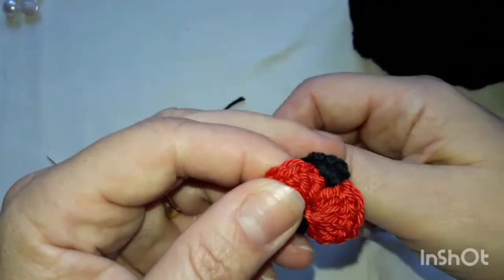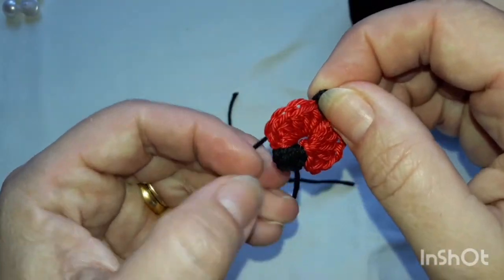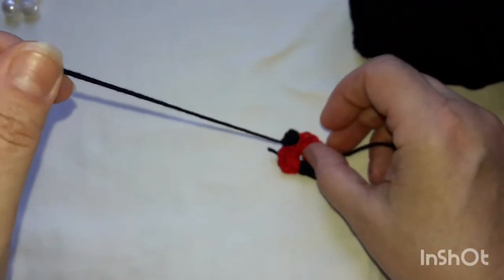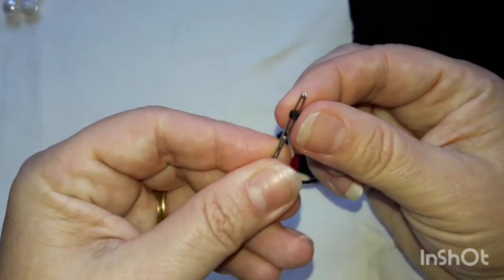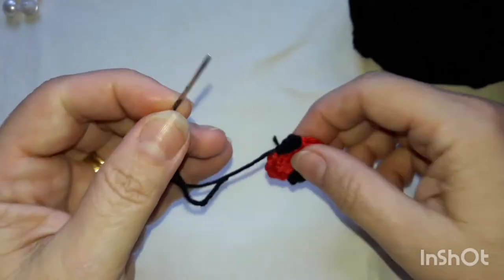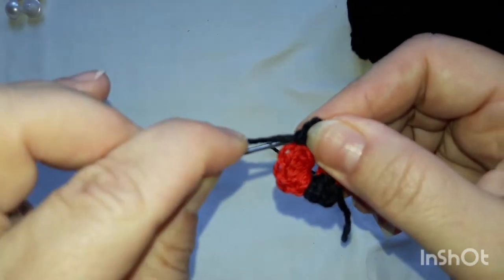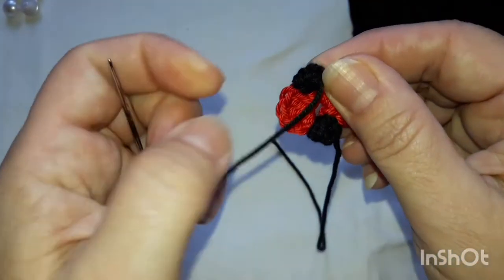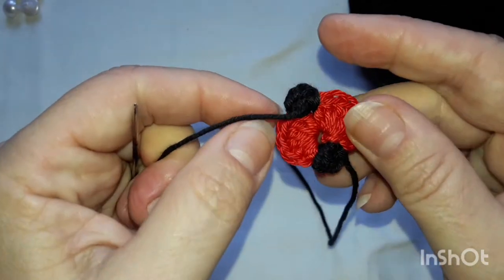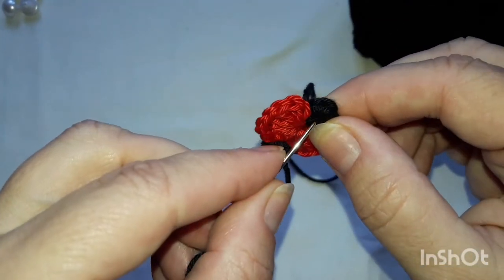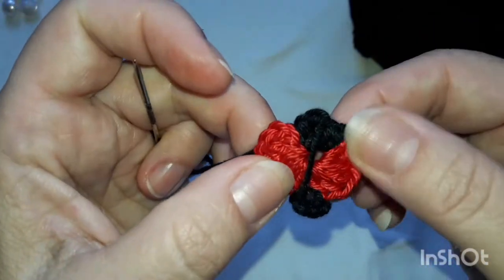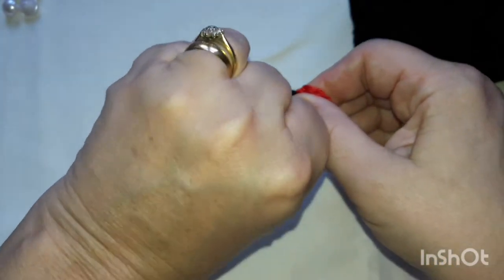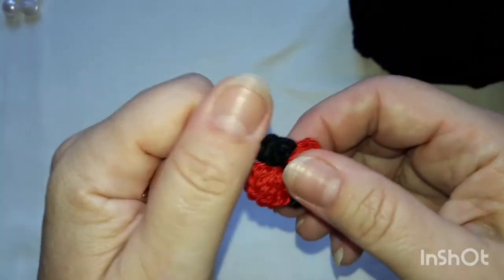All right, and now we're just going to sew the body part, make it look like it's got a body and make the spots on the wings. So thread your needle again. And I'm just going to go back down into the middle of these single crochets, just bring that head down a little bit. And then I'm going to go into the middle of the stitches there. And that creates the line for the body. Just pull that a bit tighter. That closes the body up a bit.